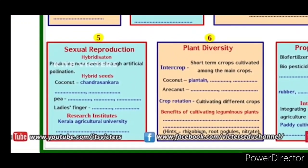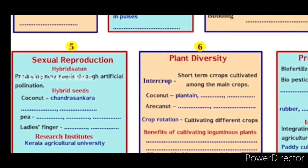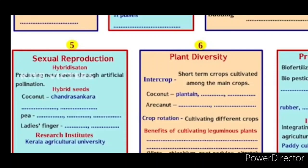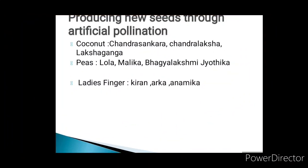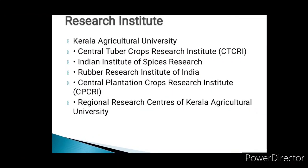Now I have a question: what are the names of the research institutes? These include Kerala Agricultural University, Central Tuber Crops Research Institute, Indian Institute for Spices Research, Rubber Research Institute of India, Central Plantation Crop Research Institute, and Regional Research Centers of Kerala Agricultural University.